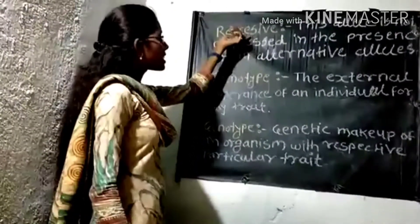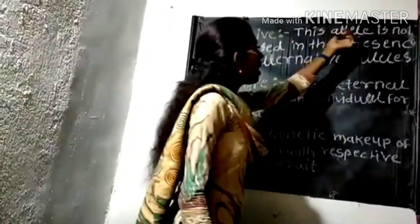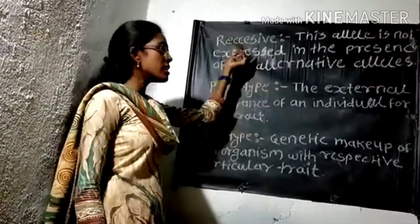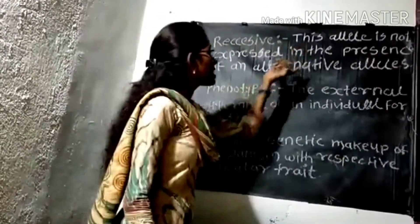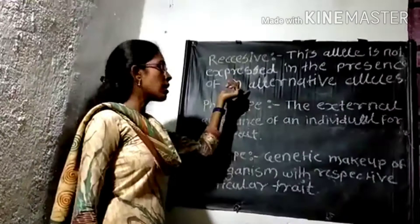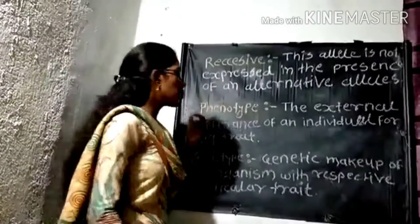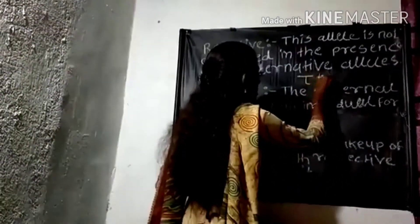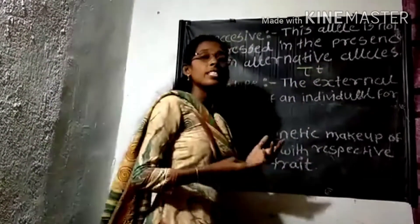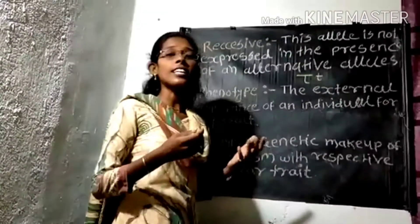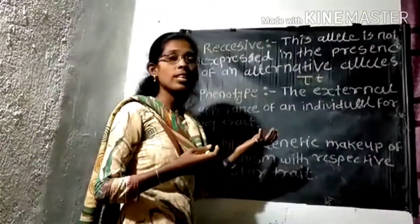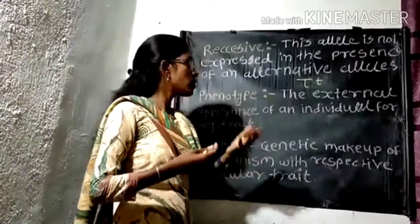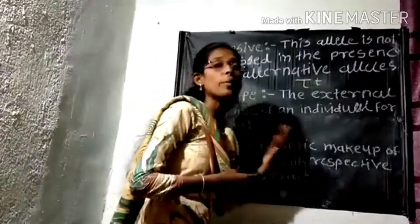The next term is 'recessive.' In a recessive condition, the allele is not expressed in the presence of the alternative allele. For example, capital T and small t — capital T and small t are alternative alleles. In this condition, the small t allele is not expressed; it is the recessive trait. The expressed allele is the dominant trait.